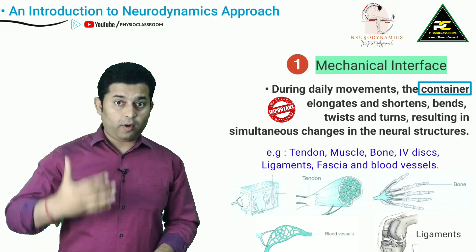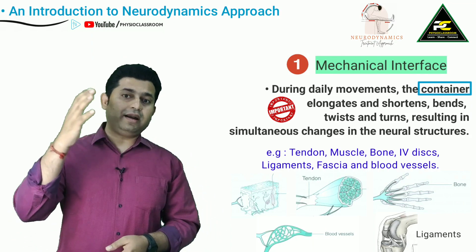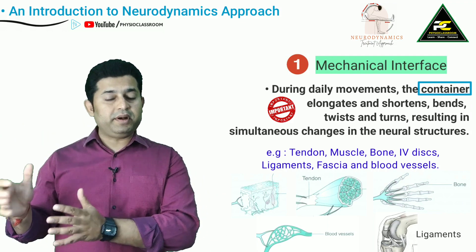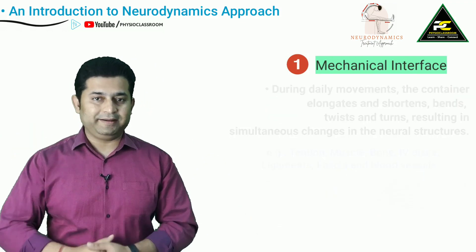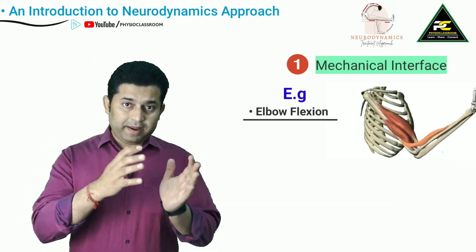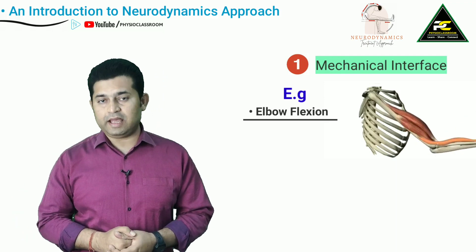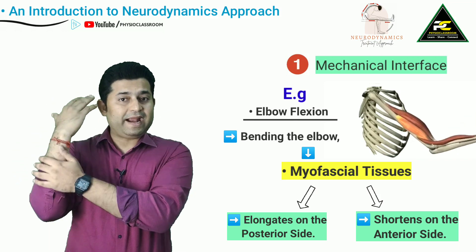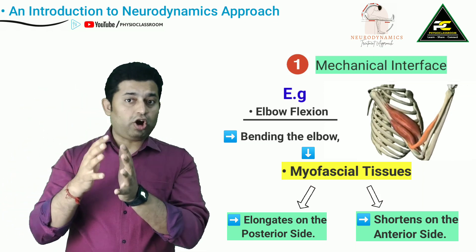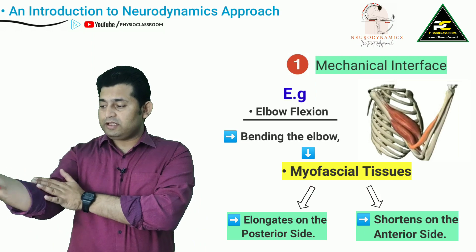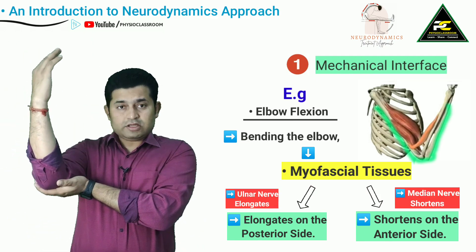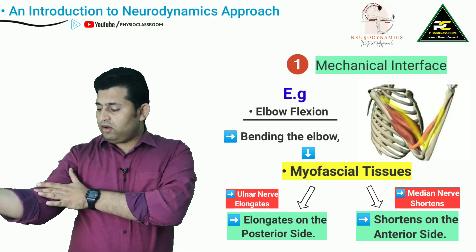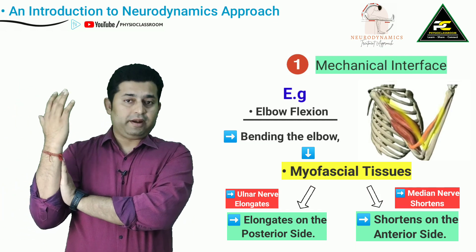For example, if we consider the whole body as the container of the nervous system, as we bend, elongate, turn, or twist our body to produce certain movements, our nervous system moves accordingly. To make this clearer with a simple example: if we bend the elbow, the myofascial tissues on the posterior side elongate and the myofascial tissues on the anterior side shorten. The same thing happens with the nerves passing through these mechanical interfaces — the ulnar nerve elongates along with the elongation of the myofascial tissue as it lies on the posterior side behind the elbow joint, while the median nerve shortens as it lies on the anterior aspect of the arm and forearm.